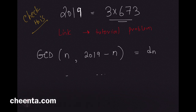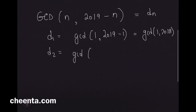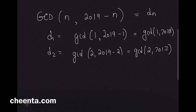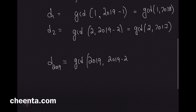So d_1 is GCD(1, 2019 minus 1) = GCD(1, 2018). Similarly d_2 = GCD(2, 2019 minus 2) = GCD(2, 2017), and so forth. The last one is d_2019 = GCD(2019, 2019 minus 2019) = GCD(2019, 0).